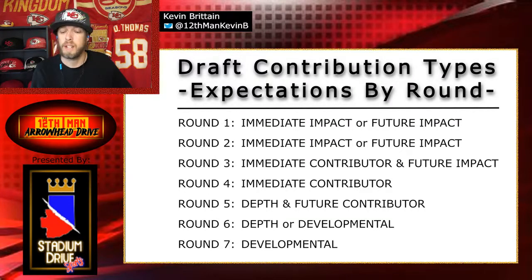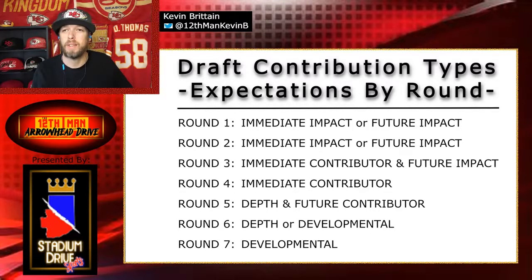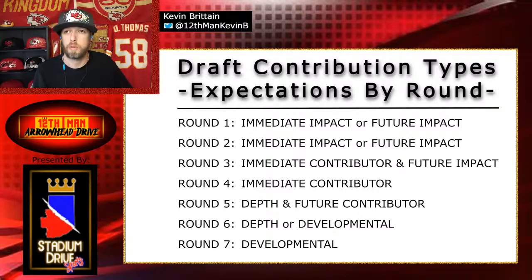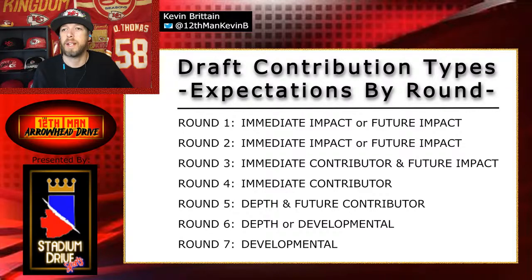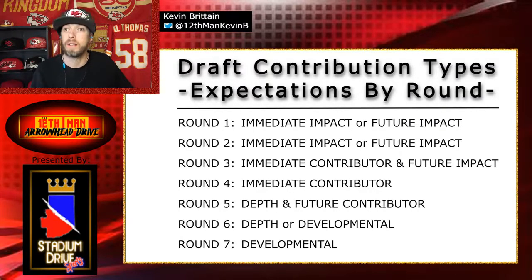In the sixth round, again a depth piece, or you can also start to look at the developmental side of things — somebody with raw talent or physical gifts that you can develop over time and try to get them moved into a contributor spot, ideally an impact spot. That developmental piece is kind of what it was with Trey Smith. It wasn't that we needed to develop his technique and abilities, but we needed to develop his health to be able to see the field, and we did that much quicker than I think anybody anticipated. We took a guy who was kind of a health-developmental pick in the draft and got an immediate impact player out of it, which is amazing.